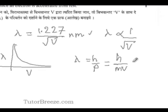Now this can further be written as H over root 2mk where k is the kinetic energy of the electron.